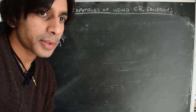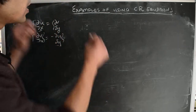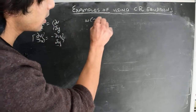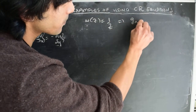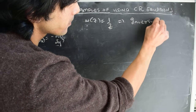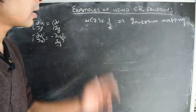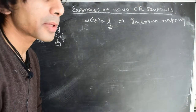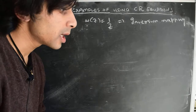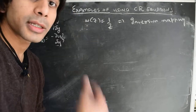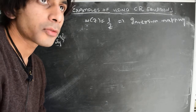In this video let us take up another example which is quite useful in the study of complex functions: the mapping W(Z) = 1/Z, called the inversion mapping. We will discuss this mapping from different points of view in coming videos, but for now let us focus on its analytical properties and see how to use the Cauchy-Riemann equations to check for its analyticity.